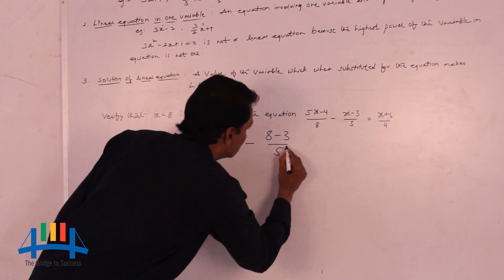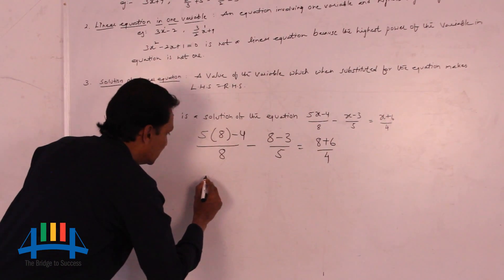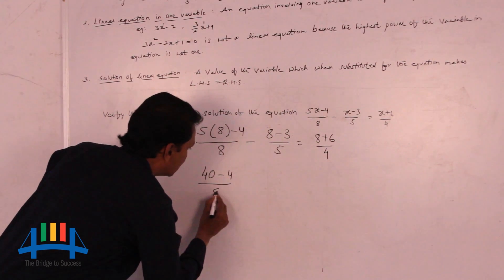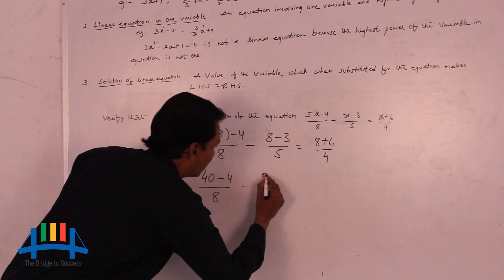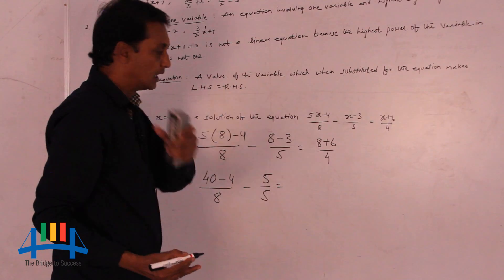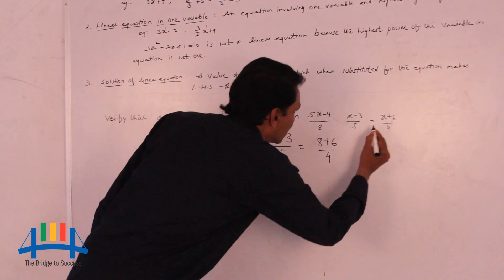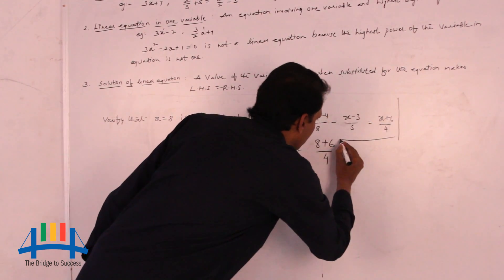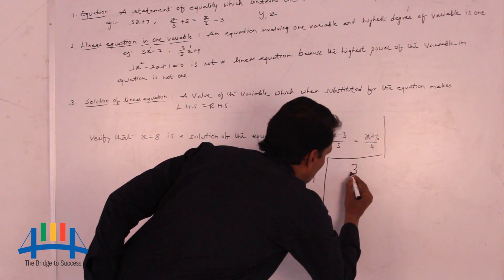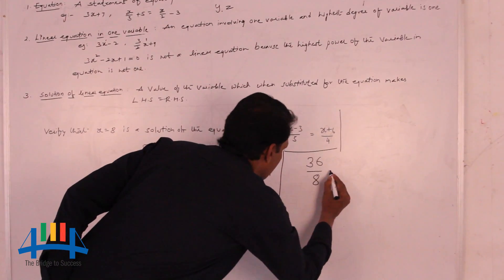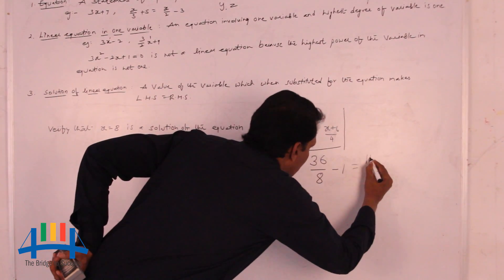Substituting x equals 8: 8 minus 3 by 5 on the left, and 8 plus 6 by 4 on the right. 5 times 8 equals 40, so we get 40 minus 4 by 8. Then 8 minus 3 equals 5, so minus 5 by 5. On the right, 8 plus 6 equals 14, giving 14 by 4. Simplifying further, 40 minus 4 by 8 becomes 36 by 8, and 5 by 5 equals 1, giving 36 by 8 minus 1 equals 14 by 4.